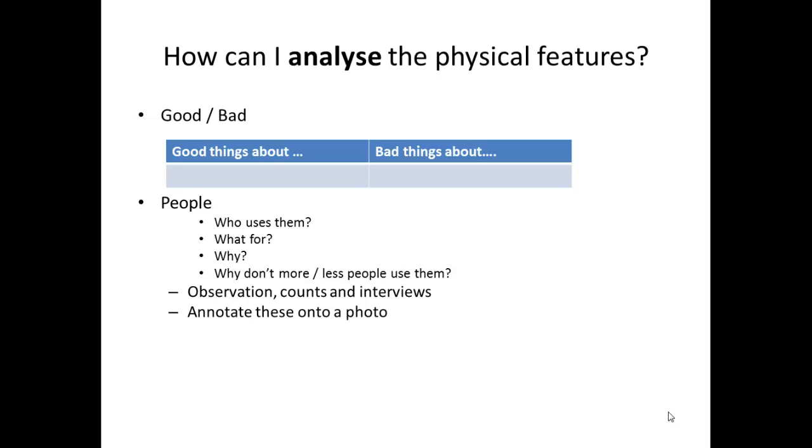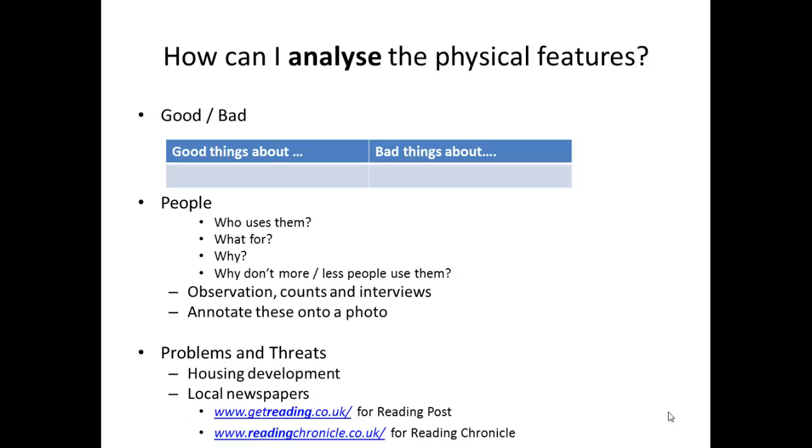The third way that we can analyse physical features is to think about some of the problems and threats that exist to them. Housing development is often a big threat to our open spaces. You could look in our local newspapers online to get articles about these threats.